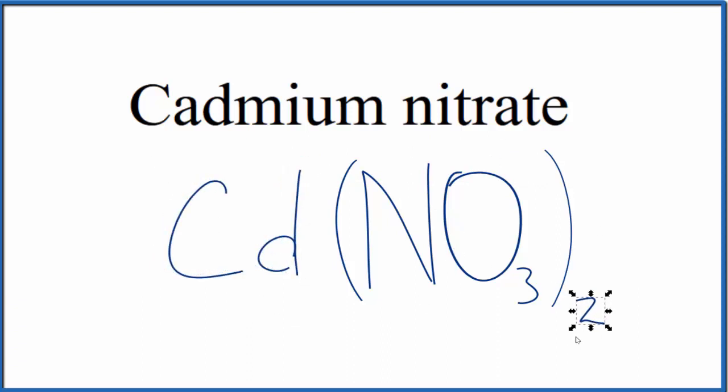Note the 2 here, that means we have these two nitrate ions, each one is 1 minus, that balances out the 2 plus on the cadmium.